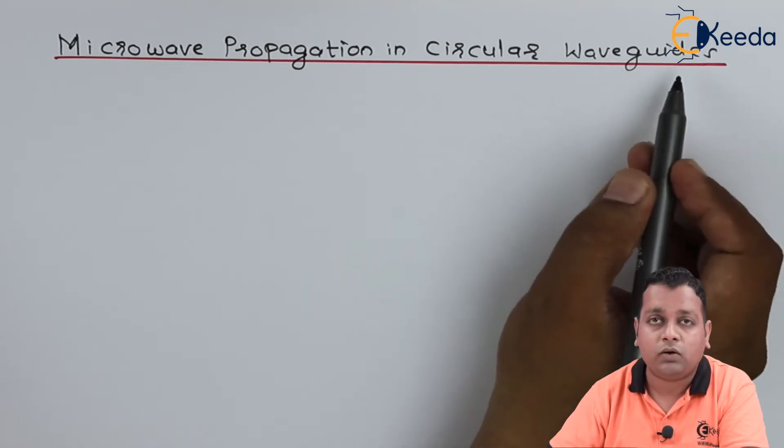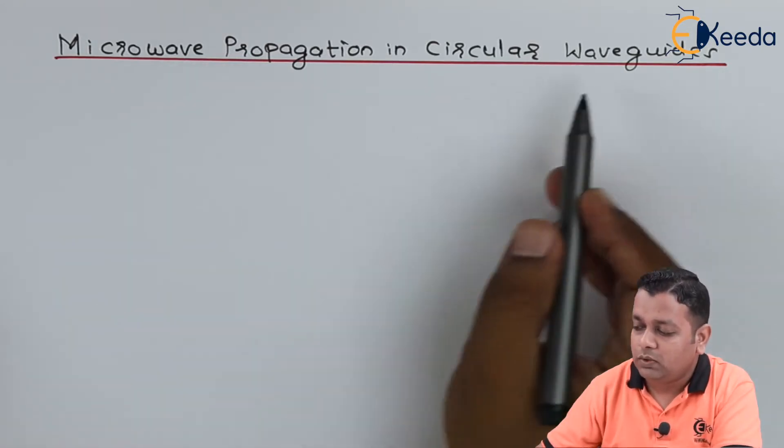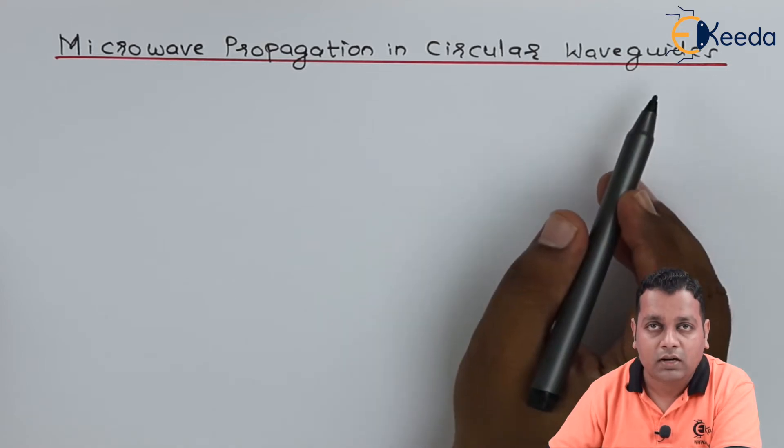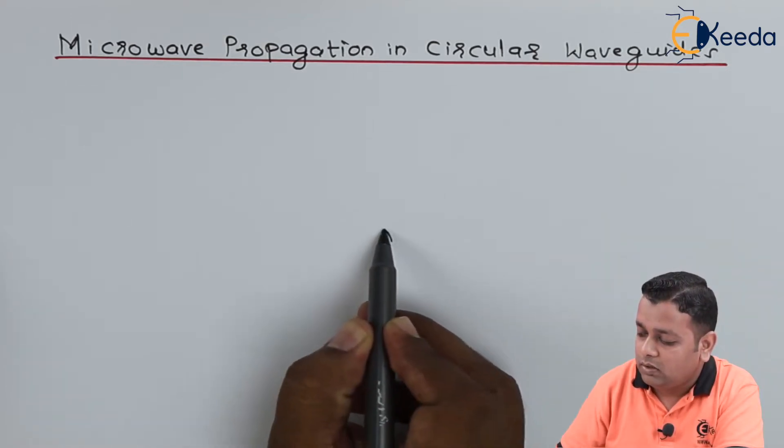Waveguide in general, what we define, is a hollow metallic tube. It is the same here but a change of cross sectional shape. In this particular circular waveguide we have the cross section of circular type.